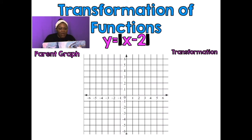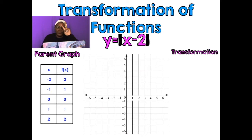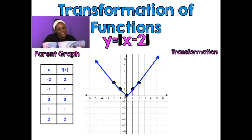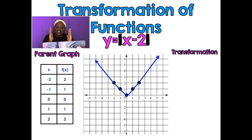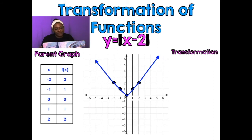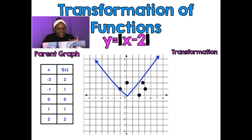Let's do an absolute value function. Always graph the parent graph first. The parent points are: negative 2, 2; negative 1, 1; 0, 0; 1, 1; 2, 2. This is what the absolute value function looks like — you should know your parent functions already. My function is Y equals absolute value of X minus 2. That minus 2 is inside the absolute value bars, so that's an H value — just like inside parentheses for quadratics, inside absolute value bars is an H value. The H value works opposite, so I'm going to move right two spaces, taking every point and moving it right two spaces. This is my transformation.